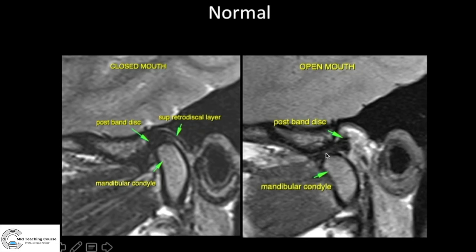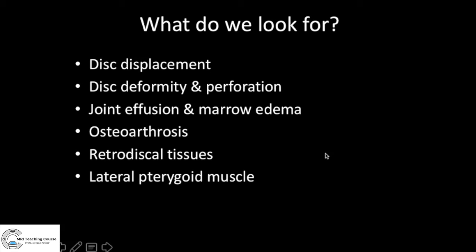Only lateral displacement of the disc is also possible but not very common. So what do we look for? First, look at the position of the disc — is it normal or displaced? Then look at the shape and intensity of the disc — is it normal, deformed, degenerated, or is there a perforation? Look for joint effusion and marrow edema, look for changes of osteoarthrosis, look at the retrodiscal tissue, and look at the lateral pterygoid muscle.